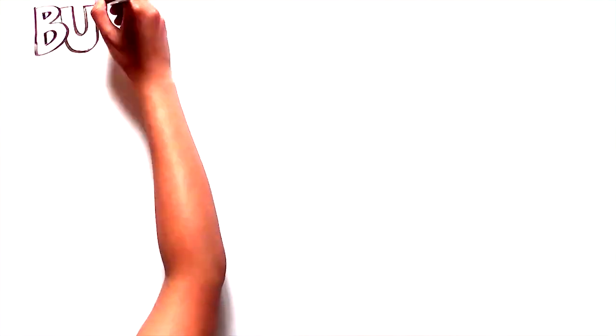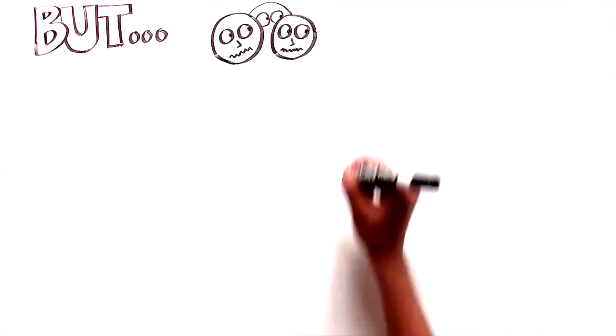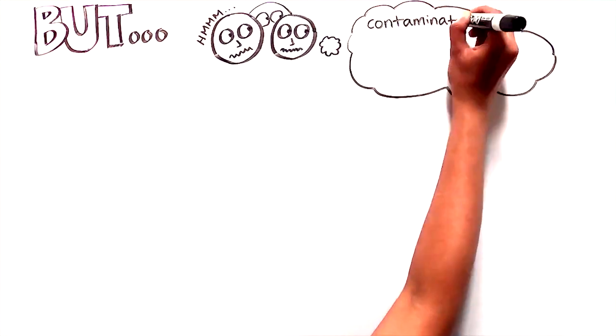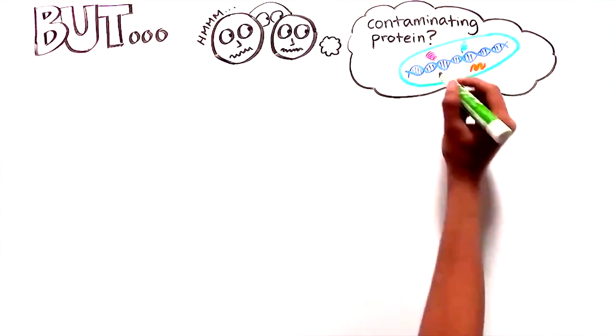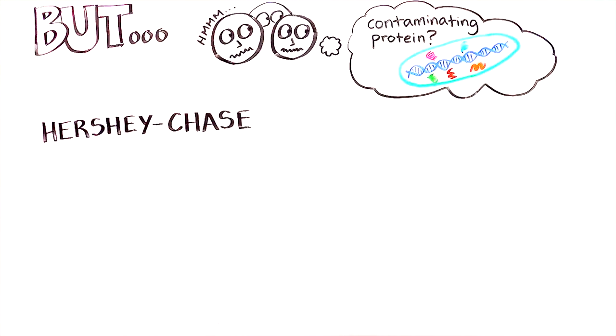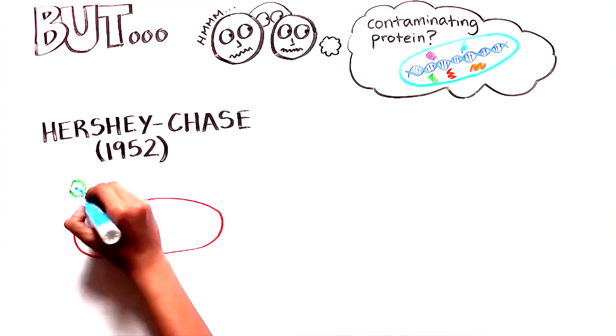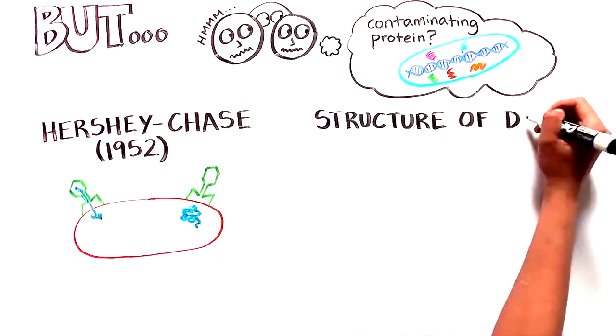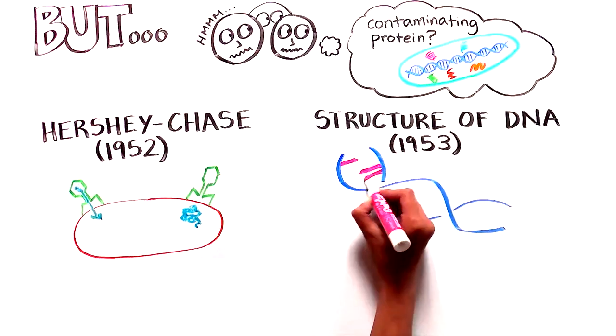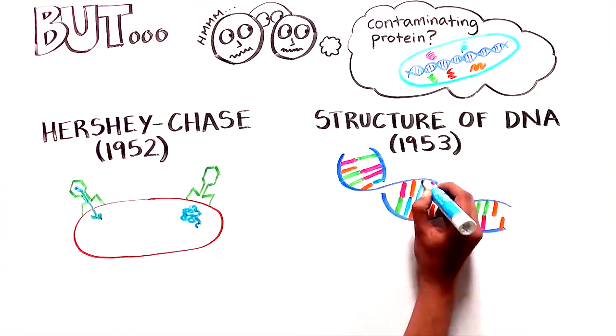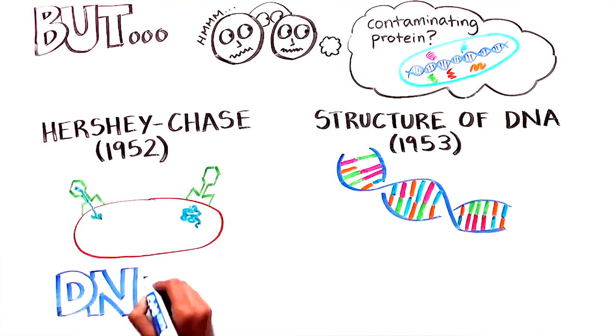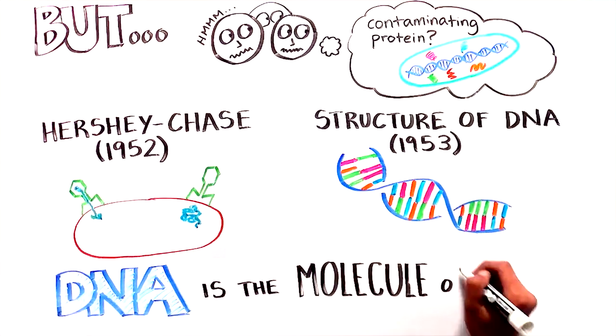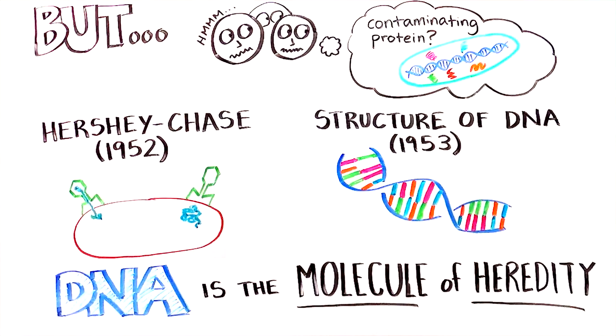Despite the beautiful evidence from these experiments, many scientists questioned whether some contaminating protein might account for the results. It took another experiment by Hershey and Chase in 1952, described in another video, and the discovery of the double helical structure of DNA in 1953 to convince everyone beyond any doubt that DNA is the molecule of heredity.